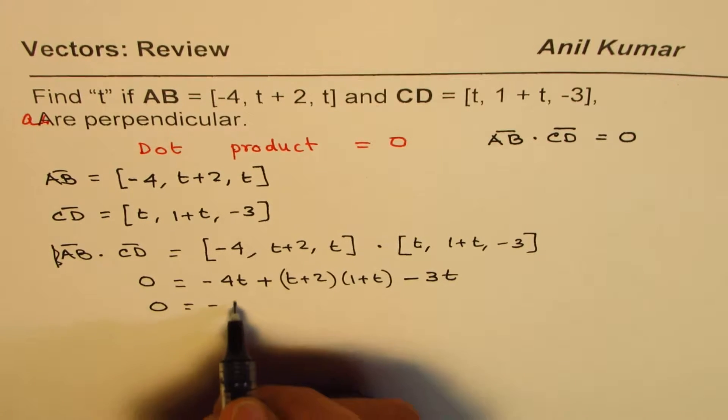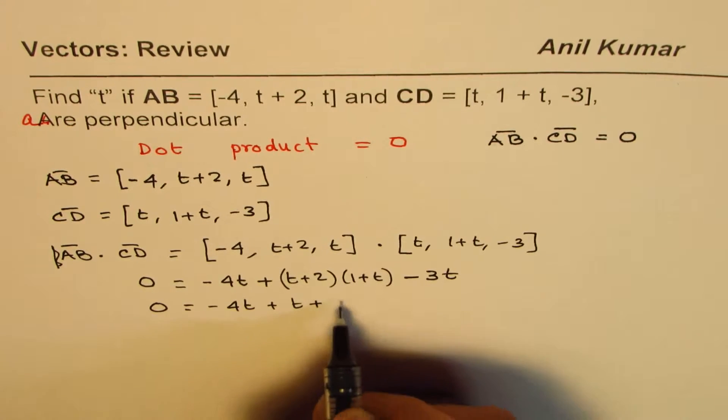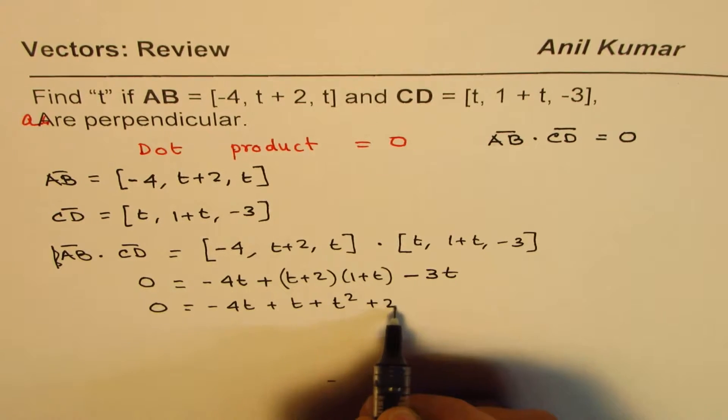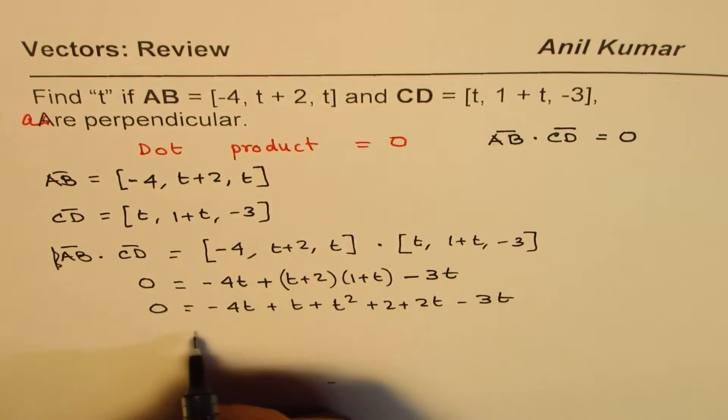So, we will write 0 here. So, minus 4t and we have here plus t plus t square plus 2 plus 2t minus 3t.